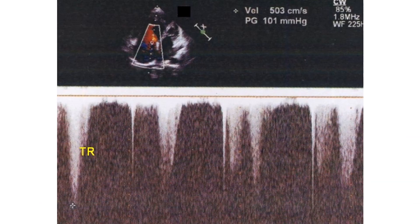Tricuspid regurgitation gradient in severe pulmonary hypertension measures 101 mmHg. The TR jet is incompletely visualized. Estimated right ventricular systolic pressure is obtained by adding the right atrial pressure — taken nominally as 10 mmHg — to this value. As the velocity is very high, interrogation is performed using continuous wave Doppler.